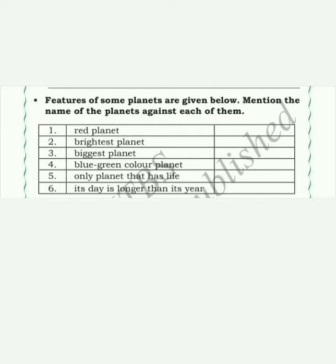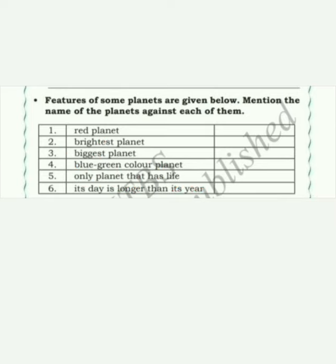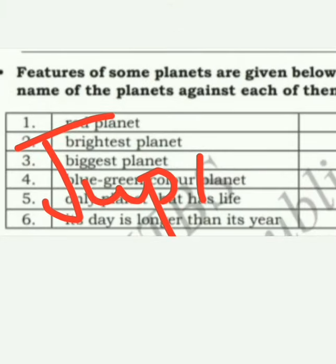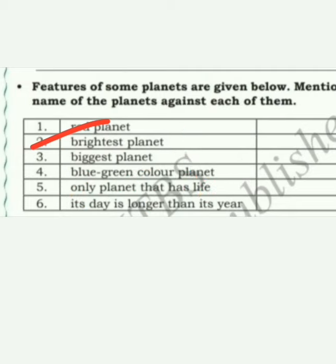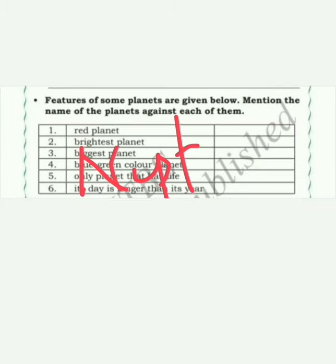Second question: brightest planet. Venus is the brightest planet. Third question: biggest planet in the solar system. Jupiter is the biggest planet in the solar system. Fourth question: blue-green color planet. Neptune is the blue-green planet.